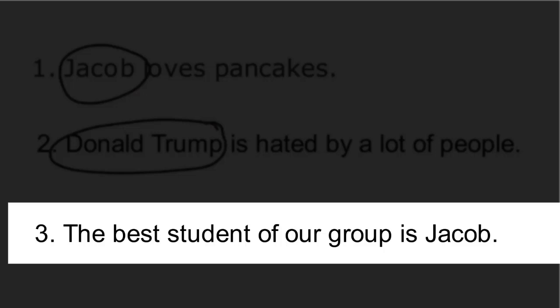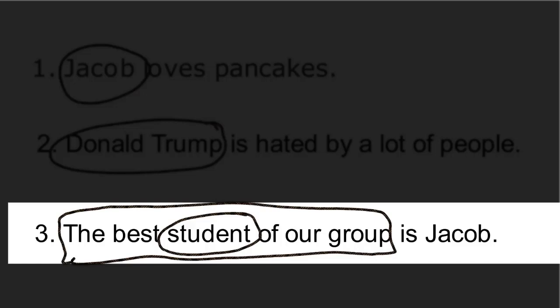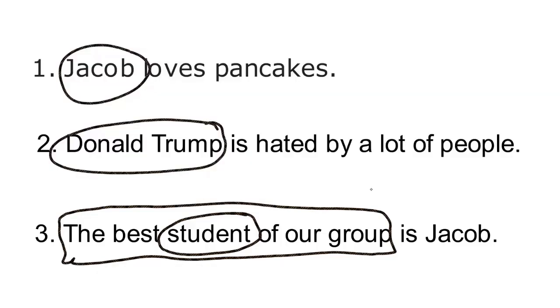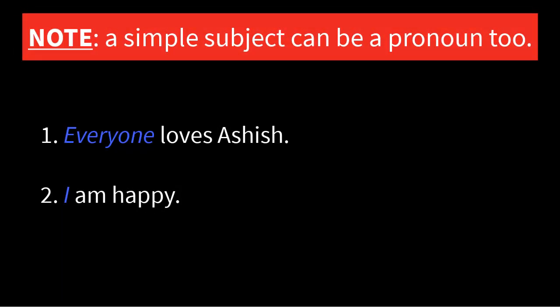Third example: 'The best student of our group is Jacob.' The subject of the sentence is 'the best student of our group,' and the simple subject is 'student.' 'The' and 'best' are pre-modifiers; 'of our group' is a post-modifying phrase. So the complete subject is 'the best student of our group' but the simple subject is just 'student.' A simple subject can be a noun — Jacob, Donald Trump, money — or a pronoun, for example: 'Everyone loves Ashish' or 'I am happy,' where 'everyone' and 'I' are simple subjects.